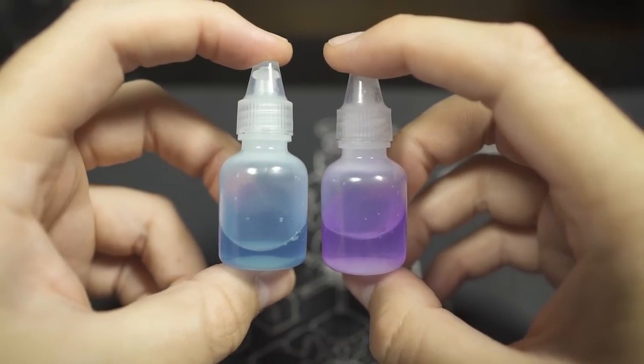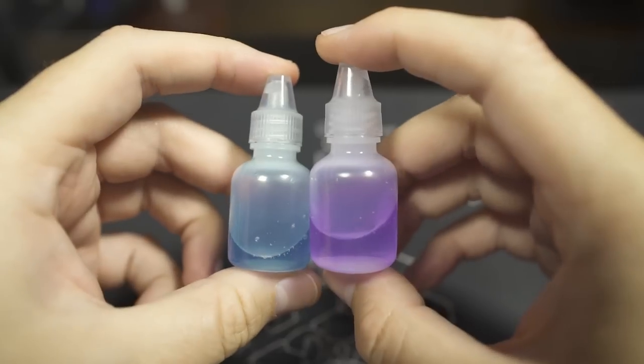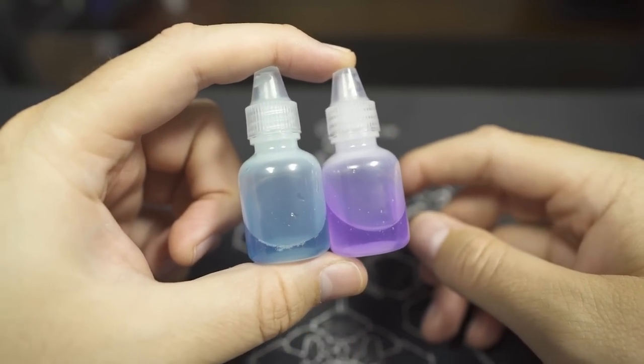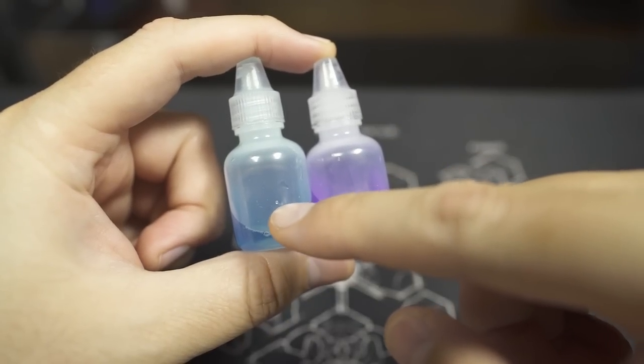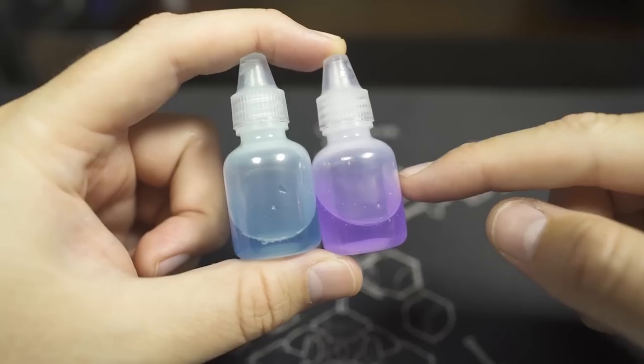This isn't the packaging they'll come in—these are just tester samples they sent out. I've been using these lubes for the last couple weeks. Compound 5 is meant to speed up your puzzles and Compound 10 is meant to make them more controllable.